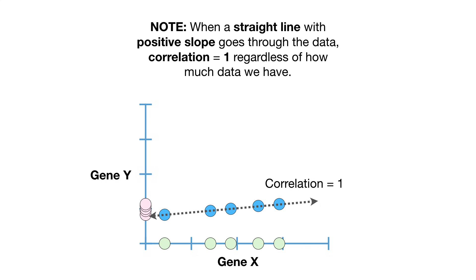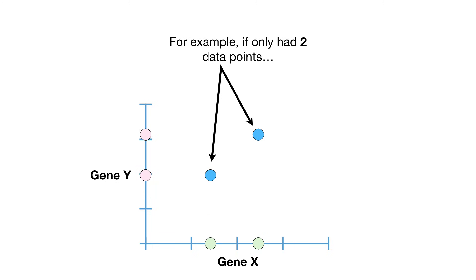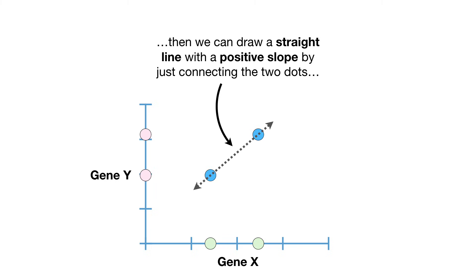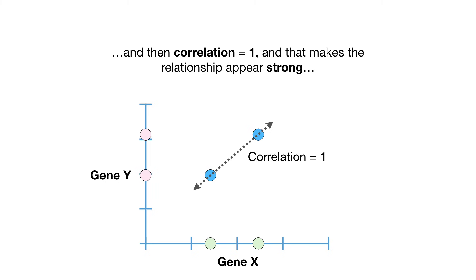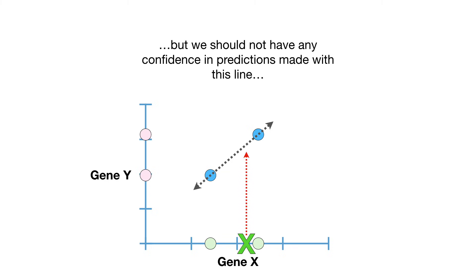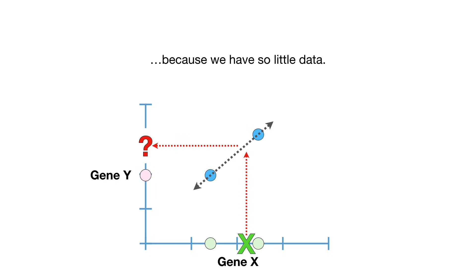When a straight line with a positive slope goes through the data, correlation equals 1 regardless of how much data we have. For example, if we only had two data points, we can draw a straight line with a positive slope just by connecting the two dots, and then correlation equals 1, making the relationship appear strong. But we should not have any confidence in predictions made with this line, because we have so little data.